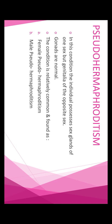The second type is pseudo hermaphroditism. In this condition, the individuals have sex glands of one sex but genitals of the opposite sex. For example, if a female has ovaries but the genitals are of the opposite sex. Similarly, a male child will have male gonads but the genitals will be female. This condition is further divided into two parts: female pseudo hermaphroditism and male pseudo hermaphroditism.